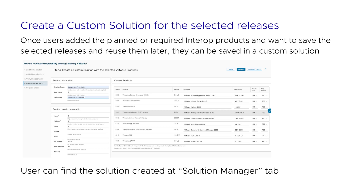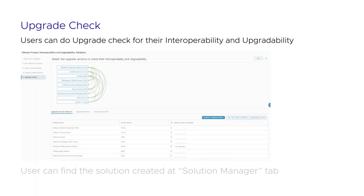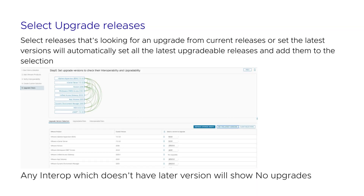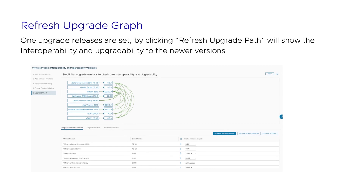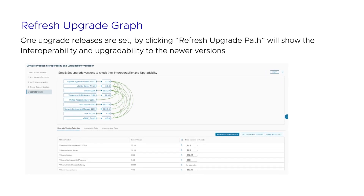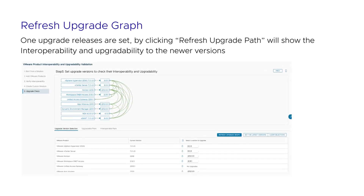Step 5: Upgrade check. Users can perform an upgrade check for their interoperability and upgradability. Select releases that are being considered for an upgrade from current releases, or set the latest versions to automatically set all the latest upgradable releases and add them to the selection. Any interop product which doesn't have a later version will show no upgrades. Once upgrade releases are set, clicking Refresh Upgrade Path will show the interoperability and upgradability to the newer versions.